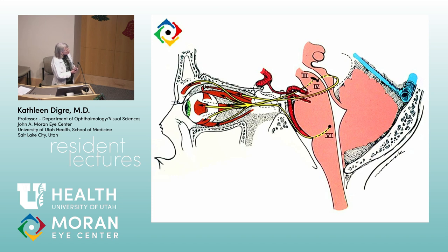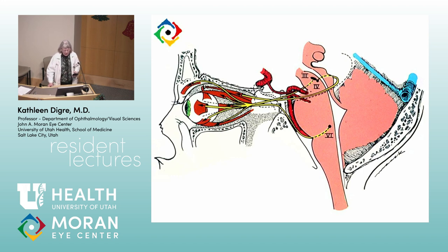The third nerve lives in the midbrain area and we'll talk about the intrafascicular, fascicular portion of the third nerve. It passes between the posterior cerebral artery and the superior cerebellar artery. It then enters the cavernous sinus where it divides into the superior and inferior divisions. It goes on to supply the eyelid, the superior rectus, the medial rectus, the inferior rectus, and also the pupil.